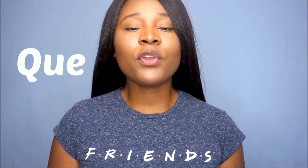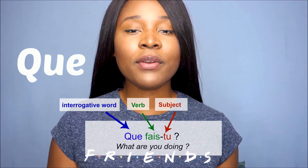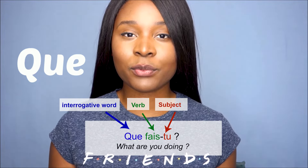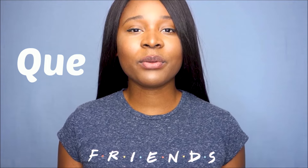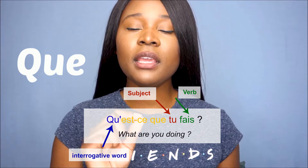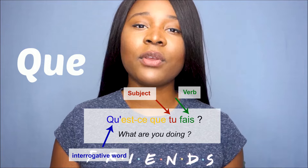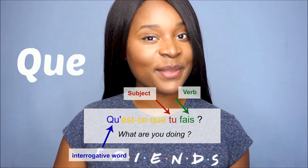In French, "what" has different translations. The first one is "que". After "que" you can have a verb and then the subject — for example: "que fais-tu?". Or you can use "est-ce que" after "que" — for example: "qu'est-ce que tu fais?". Notice that the e of "que" disappeared because it was followed by a vowel, so it became an apostrophe — remember that.